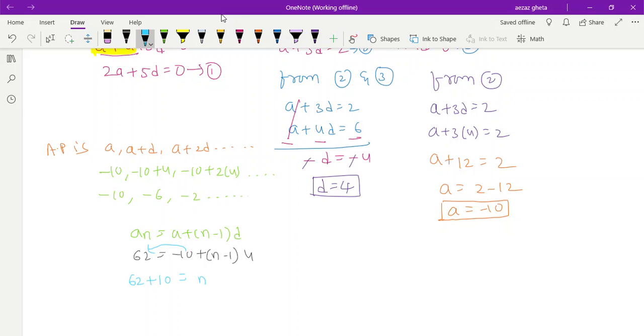62 plus 10 equals (n minus 1) times 4. So 72 divided by 4 equals n minus 1. This gives 18 equals n minus 1, so n equals 19.